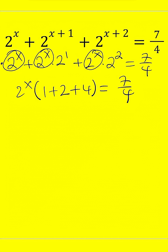But notice that 1 plus 2 plus 4 is 7, so this is going to become 2 to the x times 7 equals 7 over 4.